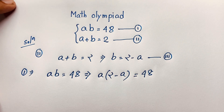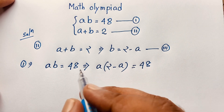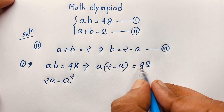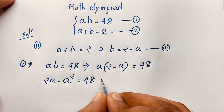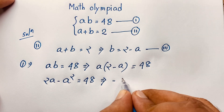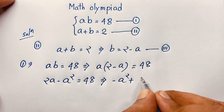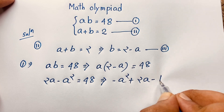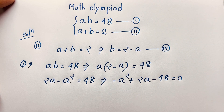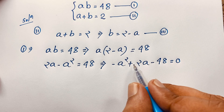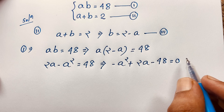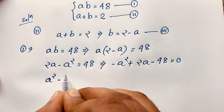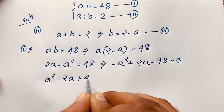Expanding, 2 times a gives 2a, and a times a gives a squared, so we have 2a minus a squared equals 48. Moving 48 to this side, it becomes negative 48, equal to 0. We get negative a squared plus 2a minus 48 equals 0. Taking negative 1 as common and multiplying both sides by negative 1, we get a squared minus 2a plus 48 equals 0.